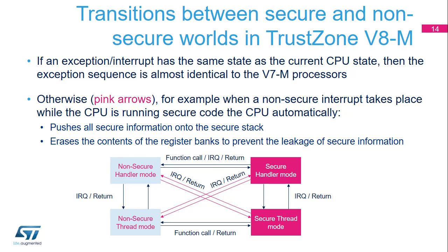When an interrupt has the same security level as the current processor state, the exception sequence is almost identical to v7M processors — it corresponds to the transition from thread mode to handler mode, handled identically in secure and non-secure states. When a non-secure interrupt occurs while the processor is running in secure state, a transition from secure to non-secure state has to be performed, avoiding any leakage in general-purpose registers. This is achieved by automatically pushing all secure information onto the secure stack and erasing the contents from the register banks. The consequence is an increase of the interrupt latency time from 12 clocks to 21 clocks.